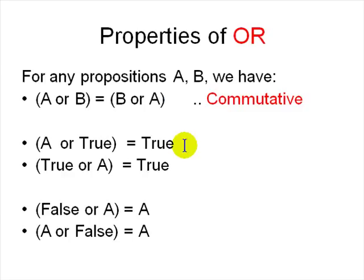And what are the properties of the or operator. Or the connective. It is commutative. That means a or b is same as b or a. For any proposition a b. And a combined with true is always true. And it doesn't matter which order you write it. And false combined with or a is always the value of a. Because false you don't have to consider.